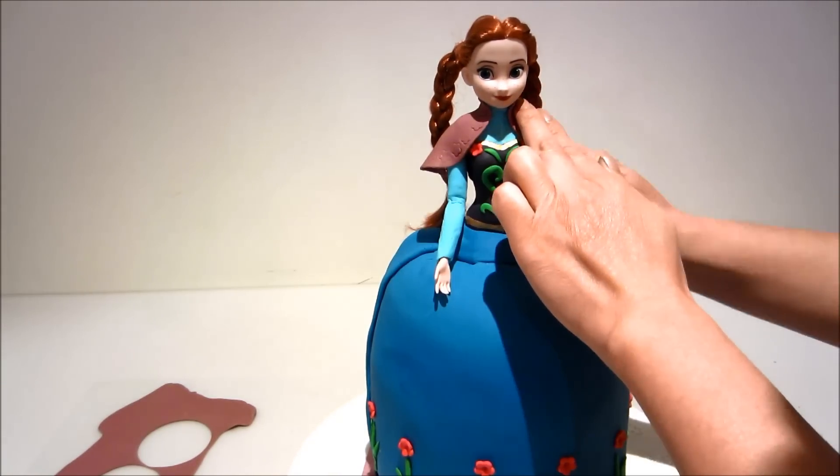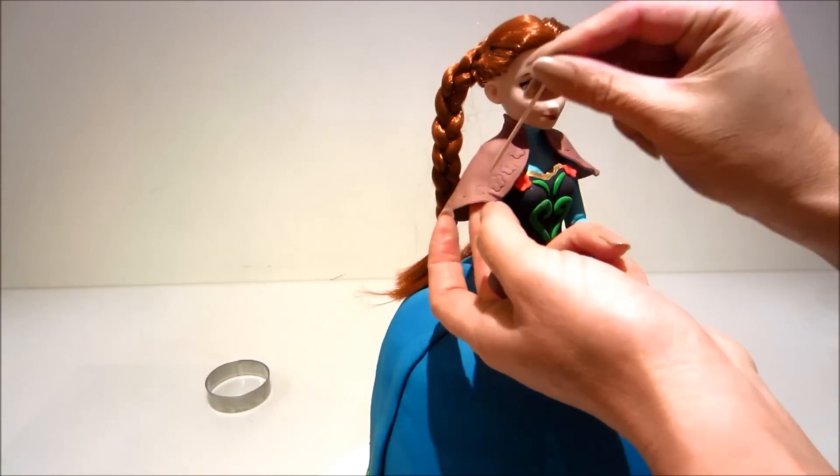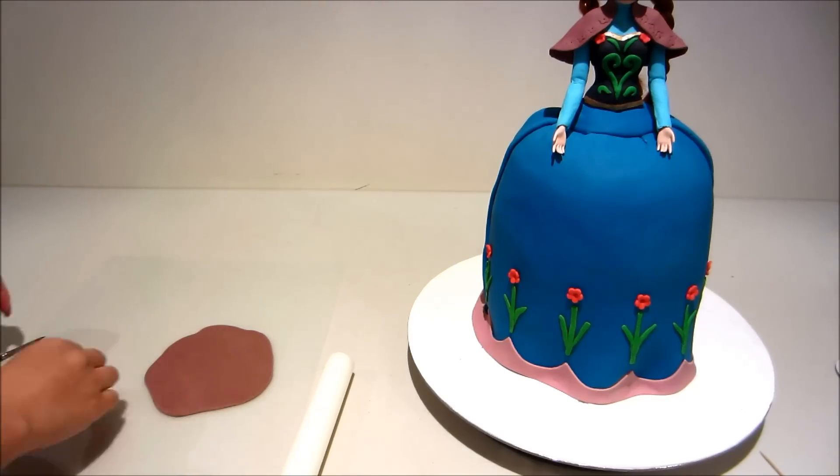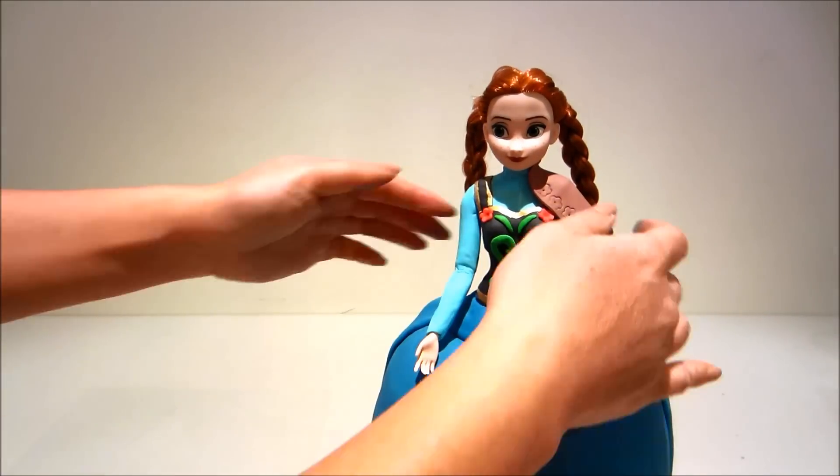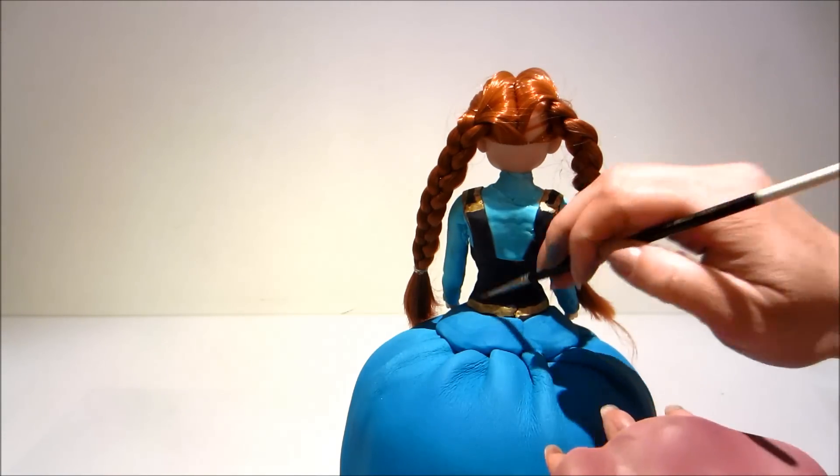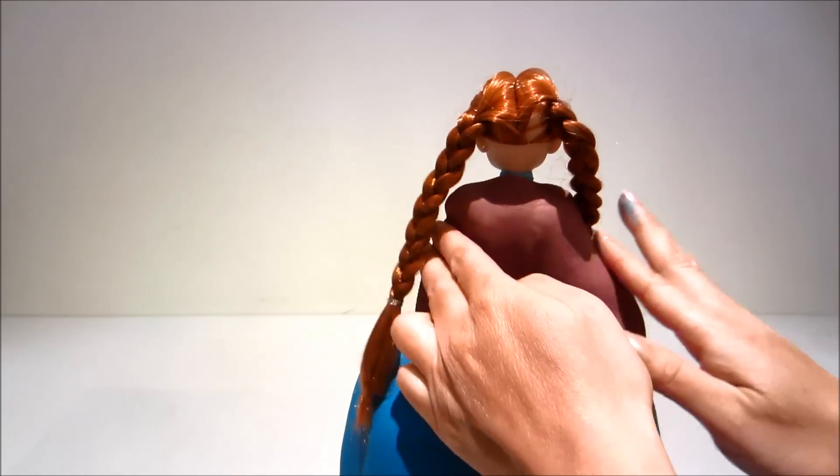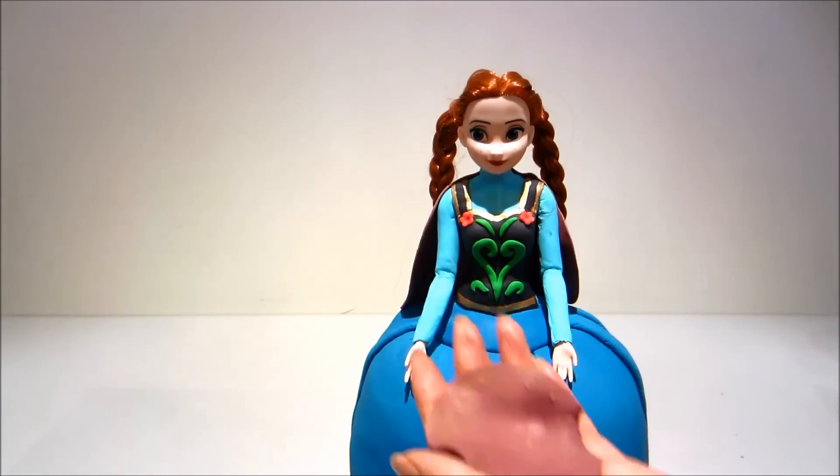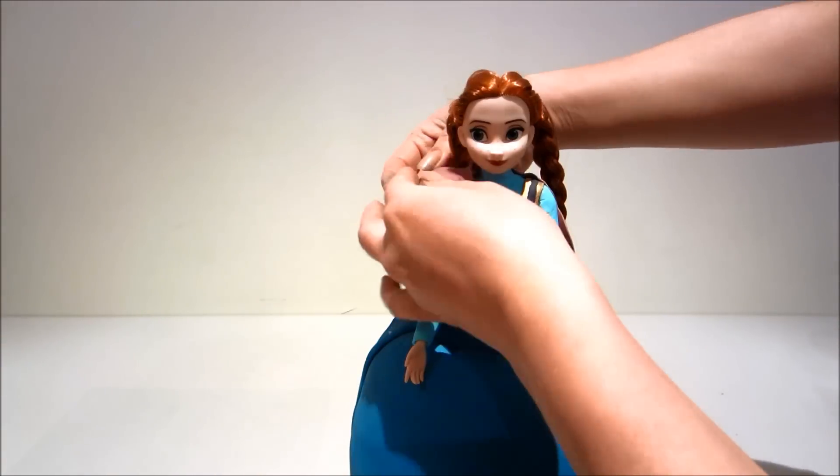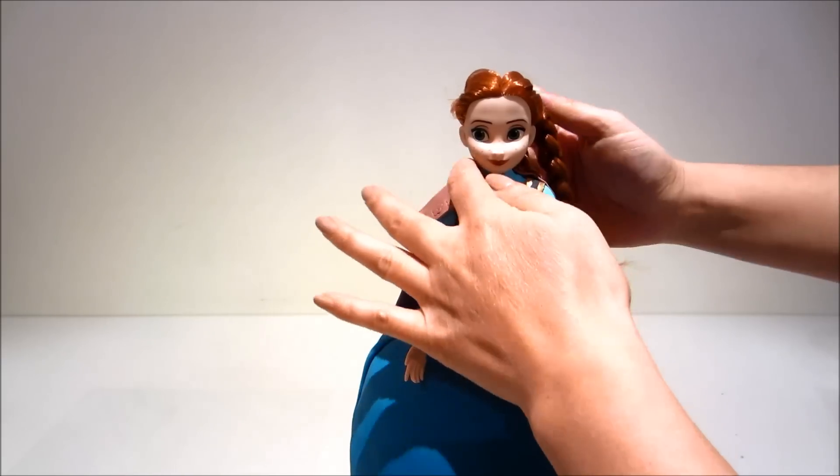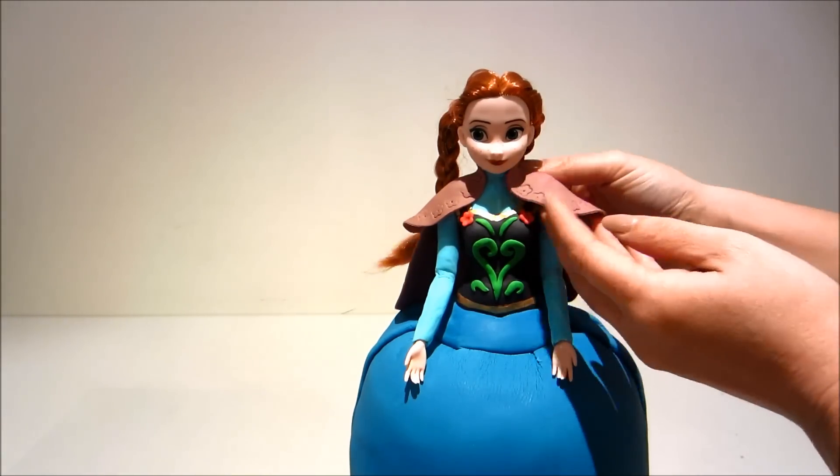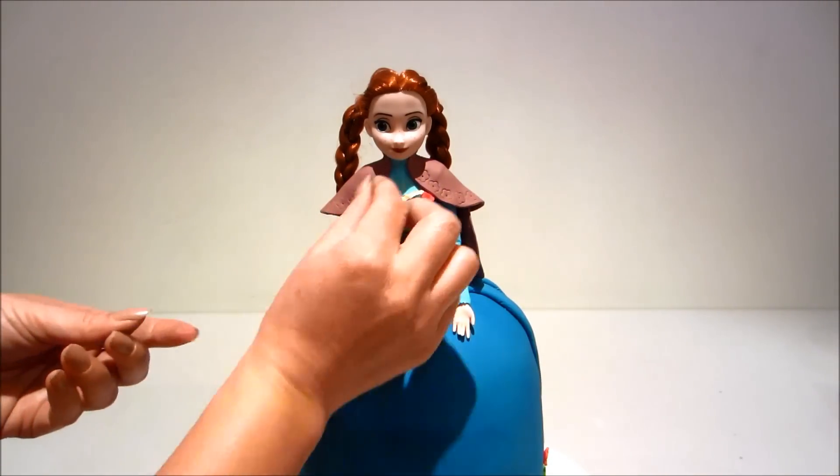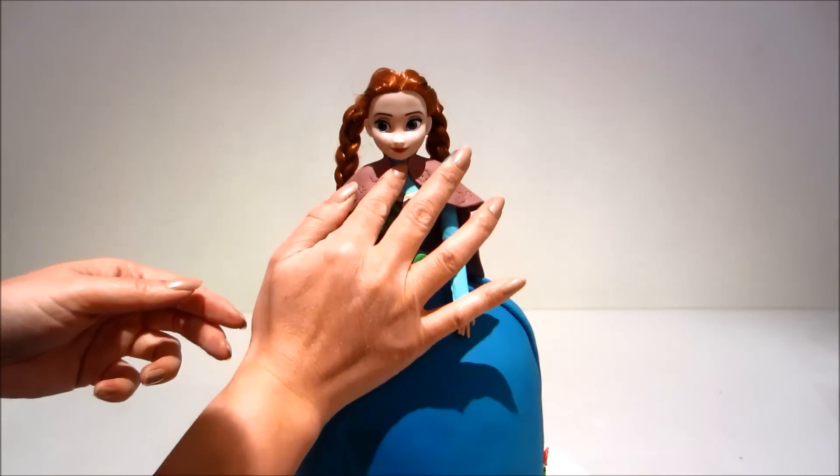And now I've rolled out another portion of the maroon fondant and I'm just going to attach it at the back to form the rest of her cape, gluing it on with water. And now attaching the shoulder portions. Okay, rolling out two tiny little bits of black fondant and just attaching it where her collar is.